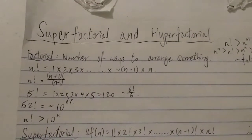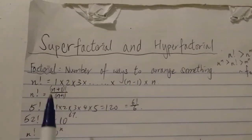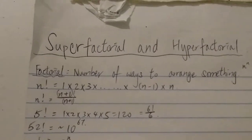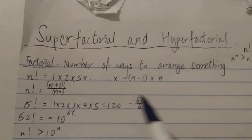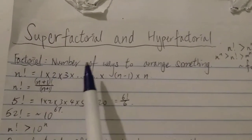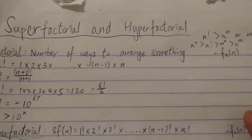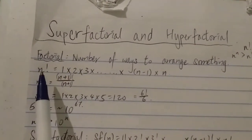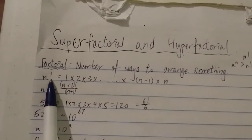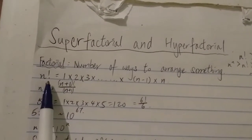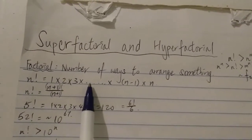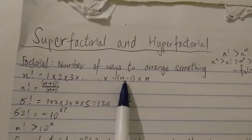First, let's look at the factorial. The basic factorial that you probably learned in middle school or high school. Factorial is basically used to calculate the number of ways to arrange something. So n factorial — written as n with an exclamation point — is basically 1 times 2 times 3 and so on, all the way to n.